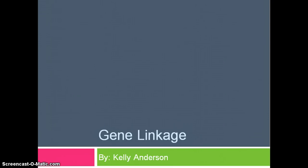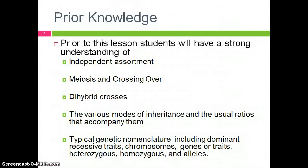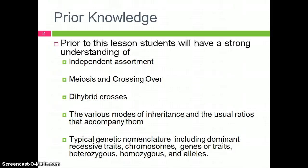Today we will be discussing gene linkage and the process that led to its discovery. In order for students to understand this lesson, I expect them to already comprehend independent assortment, meiosis and crossing over, dihybrid crosses, the various modes of inheritance and the usual ratios that accompany them, and some typical genetic nomenclature including dominant versus recessive traits, genes, alleles, heterozygous versus homozygous, and chromosomes.